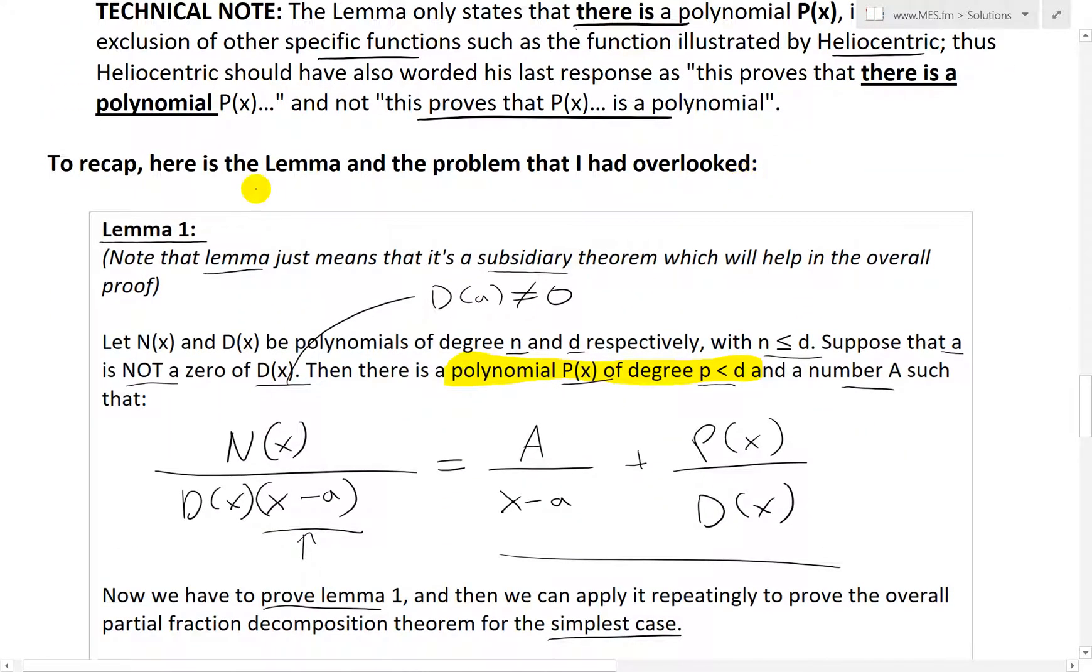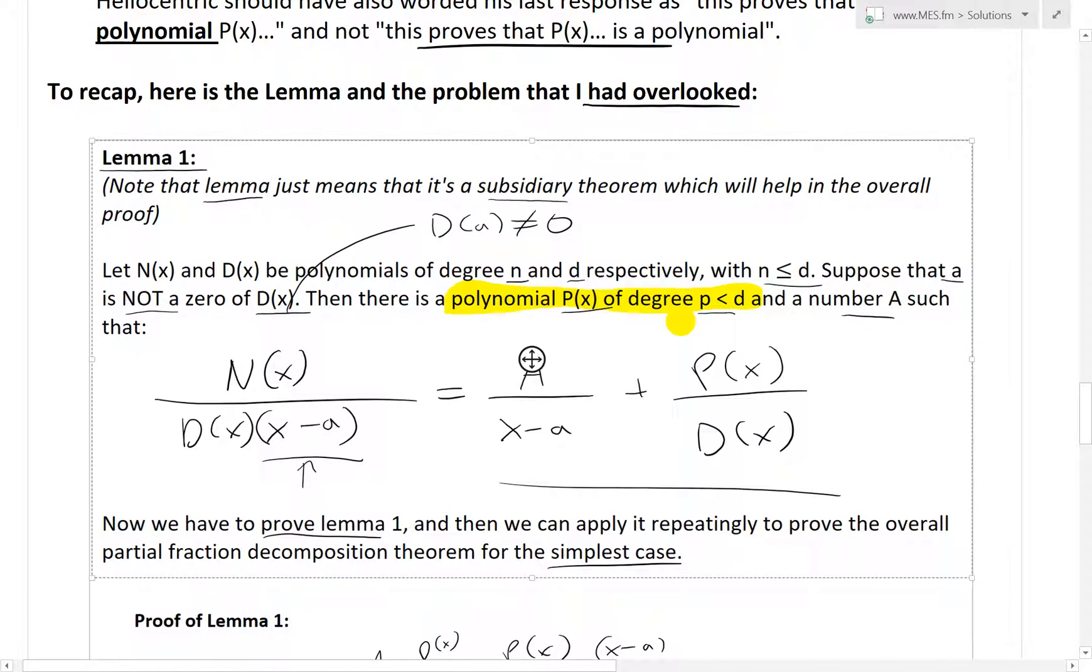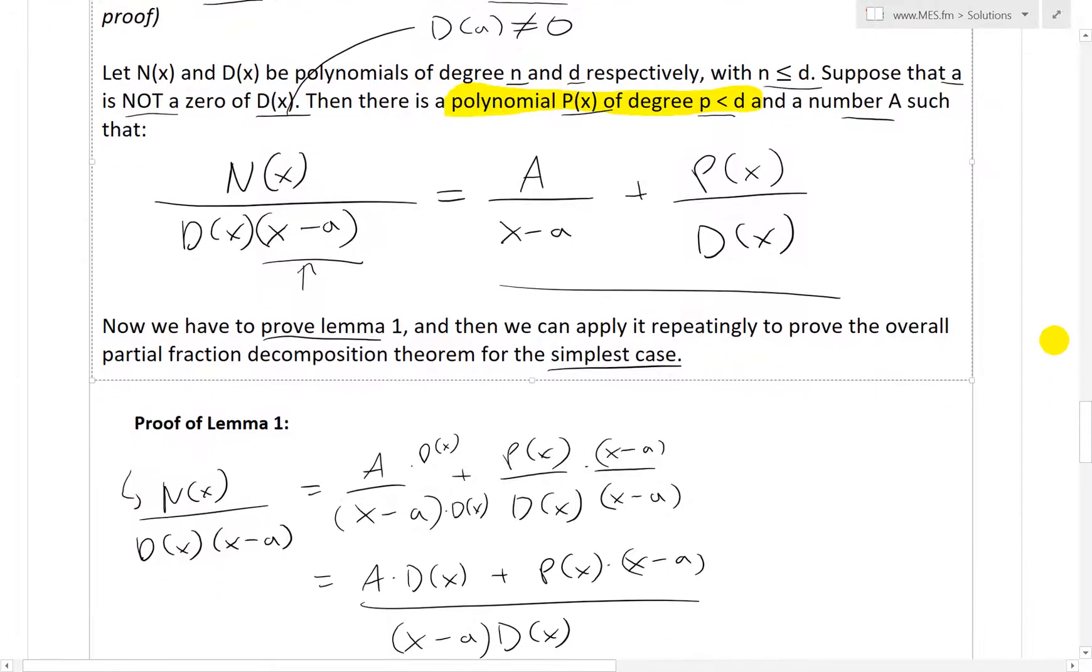So to recap, here's the lemma and the problem that I overlooked. Lemma 1: let N(x) and D(x) be polynomials of degree n and d, respectively, with n is less than d. Suppose that a is not a zero of D(x). Then there is a polynomial P(x) of degree p less than d and a number A such that we have this part over here.